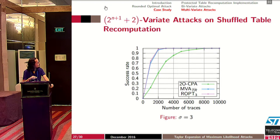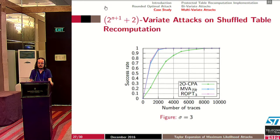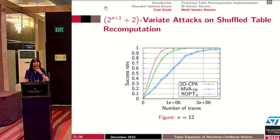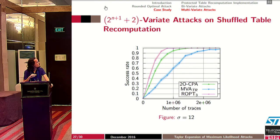For noise σ=3, our new attack at degree 3 and the multivariate attack perform similarly and are better than the second-order CPA. This means the most important term in the Taylor expansion is the third-degree one. When the noise increases further — for example σ=12 — the second-order CPA is closer to our new attack and much better than the multivariate table recomputation attack. This means the important term in the Taylor expansion is now the second-degree one, though the third-degree term still has an effect since our new attack outperforms second-order CPA.